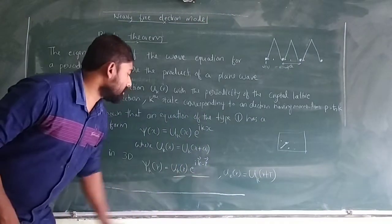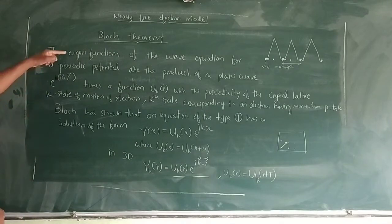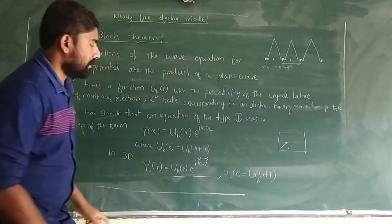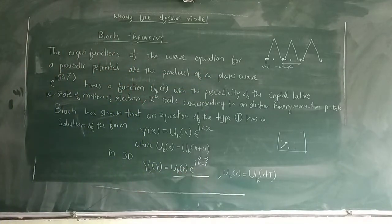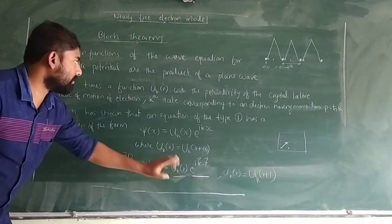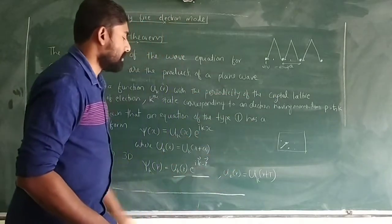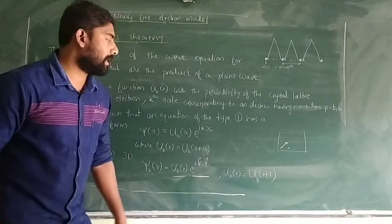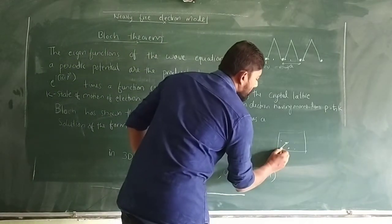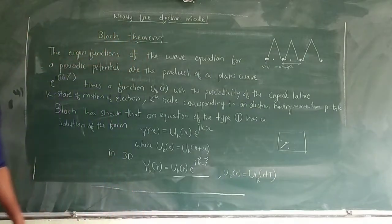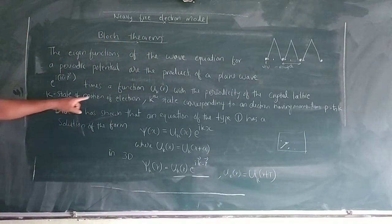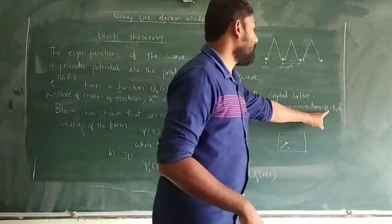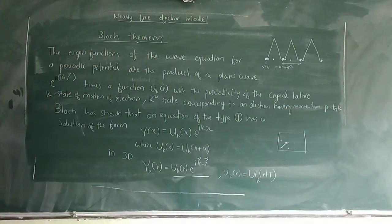This relation is the Bloch theorem. Bloch theorem states that the eigenfunctions of the wave equation for a periodic potential are the product of a plane wave, e^(ik·r), times a function u_k(r) with the periodicity of the crystal lattice, where u_k(r) = u_k(r + T). Here, k is the wave vector representing the state of motion of the electron, corresponding to an electron having momentum p = ℏk.